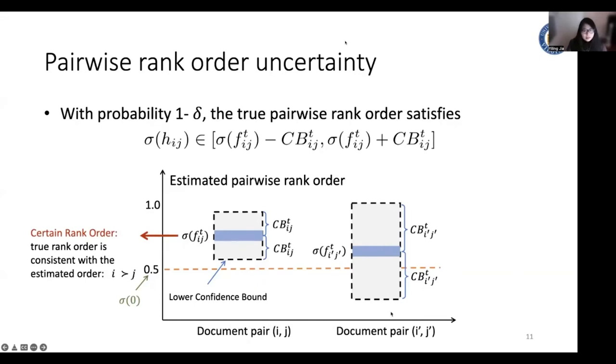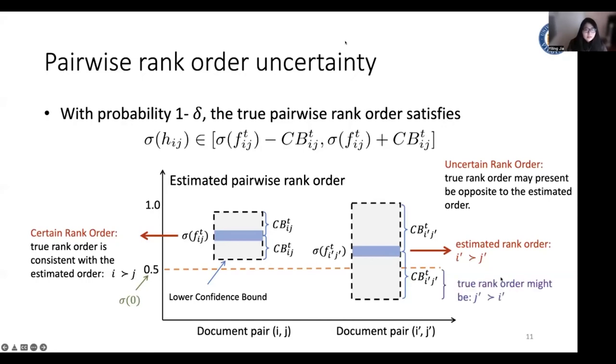But for document pair i' and j', we consider it as an uncertain rank order, because our estimated rank order is i' is more relevant than j'. In other words, the true rank order may present an opposite rank order compared to the estimated one. So we need to perform some exploration of this pair so that the confidence interval can be shrinking, and we can get more certain about our estimation.